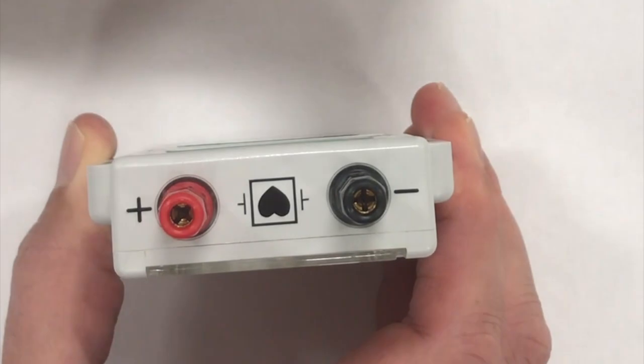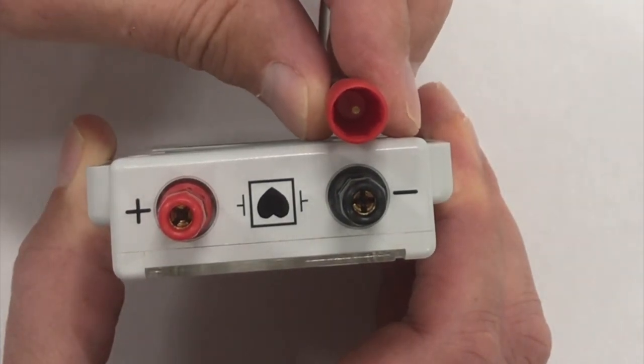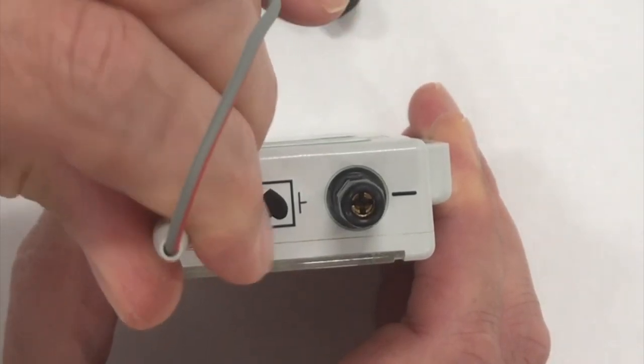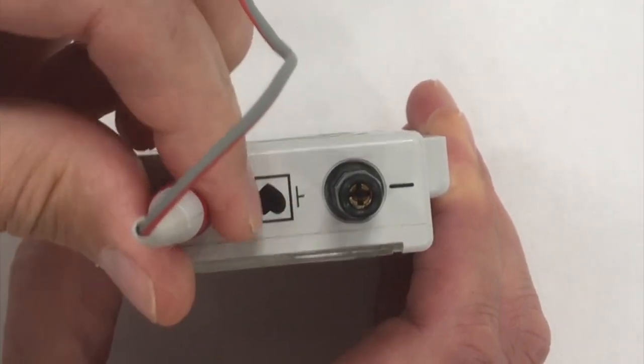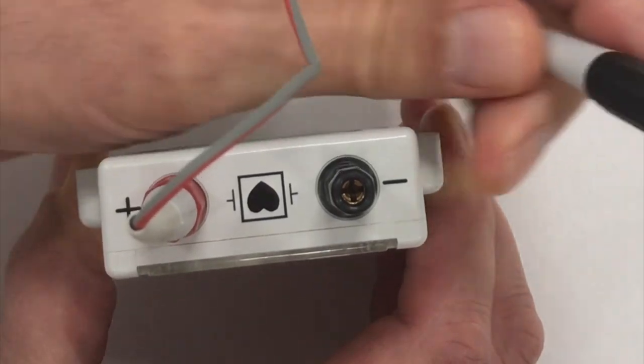So I have a cable here with a pin. You can see the pin inside. And what I'm going to do is just pop that pin into the socket and rotating the barrel tightens the device, tightens the collet onto the pin.